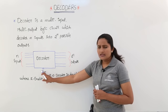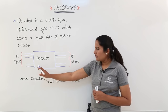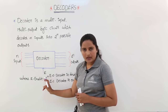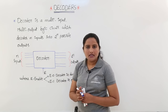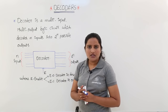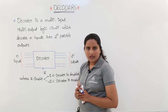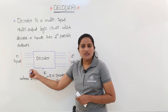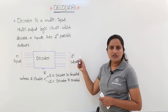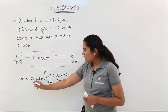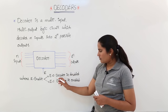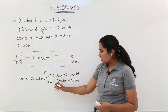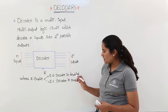Here is the block diagram of a decoder. You can observe n inputs and 2 power n outputs with an enable line. This enable line keeps the decoder in the on condition when it is equal to 1. If enable is equal to 0, even though you are providing inputs, the decoder is going to provide 0 at the output.